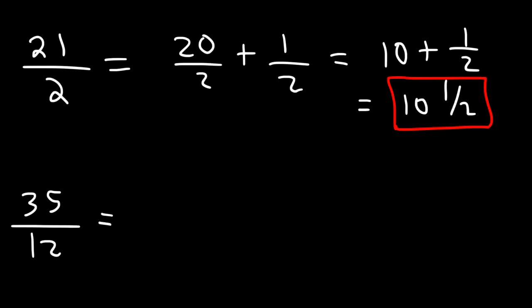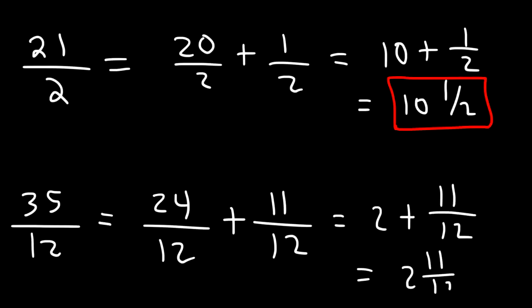Now for this one, multiples of 12 are 12, 24, 36, 48. But we want to use the highest multiple of 12 that's just under 35. And so the highest multiple of 12 is 24. 35 minus 24 is 11. So we have this. 24 divided by 12 is 2. So you get 2 plus 11 over 12, which means the answer is 2 and 11 twelfths.